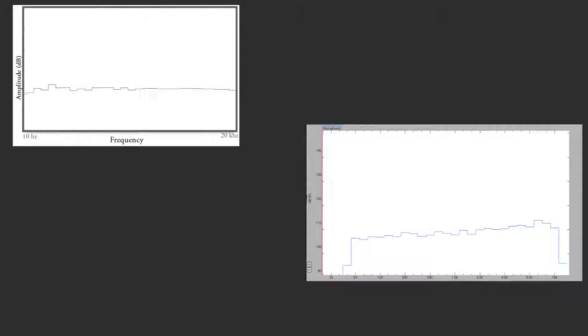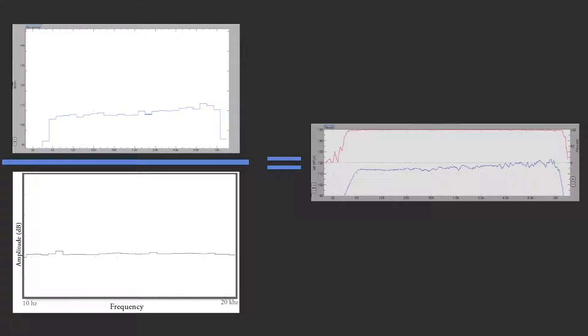The output divided by the input results in a transfer function, a comparison of the level difference between the two signals. These measurements can be used to compare performance to published specifications.